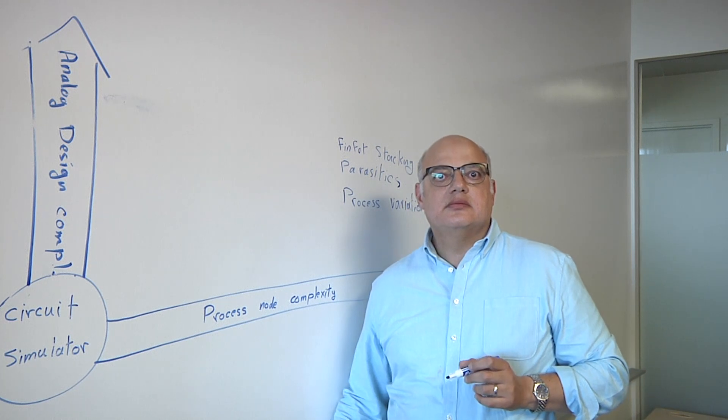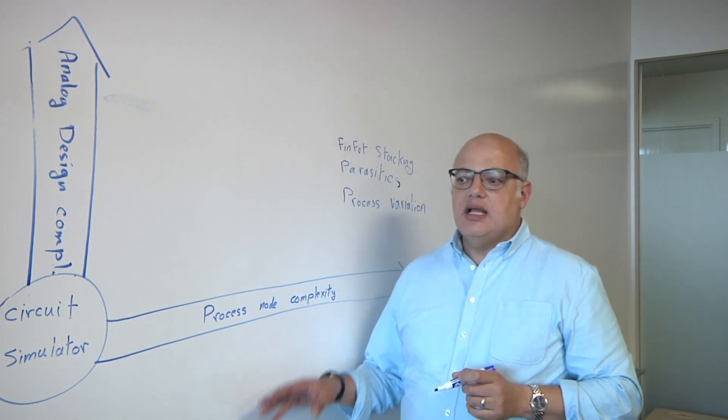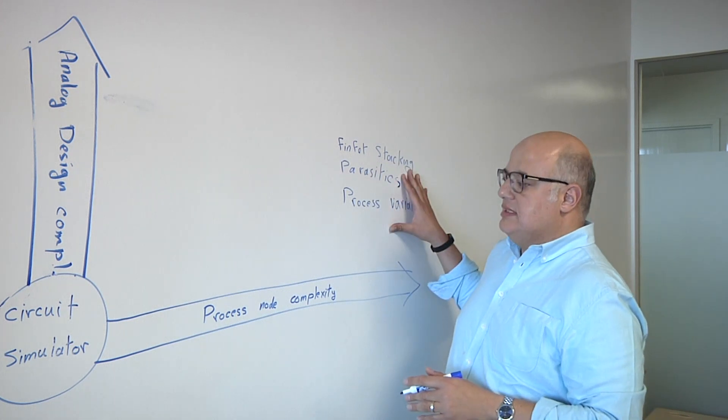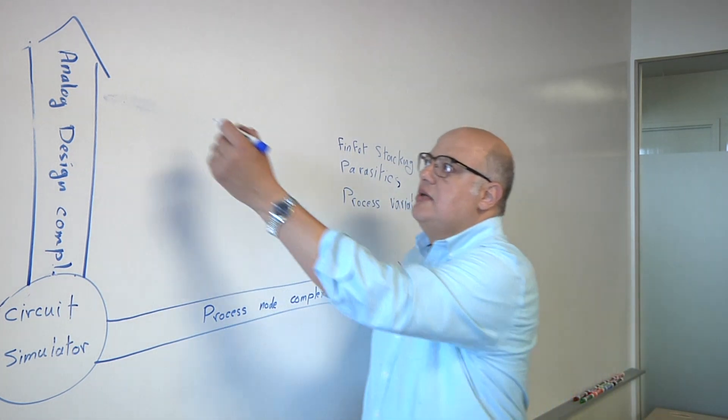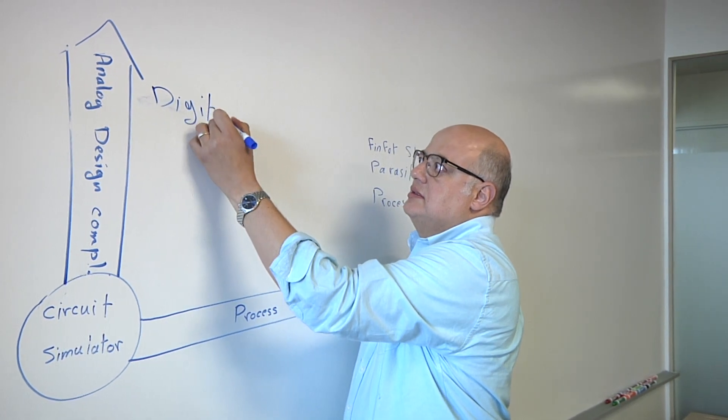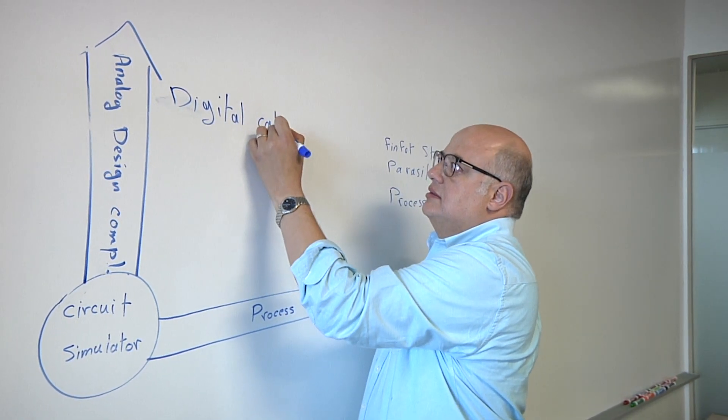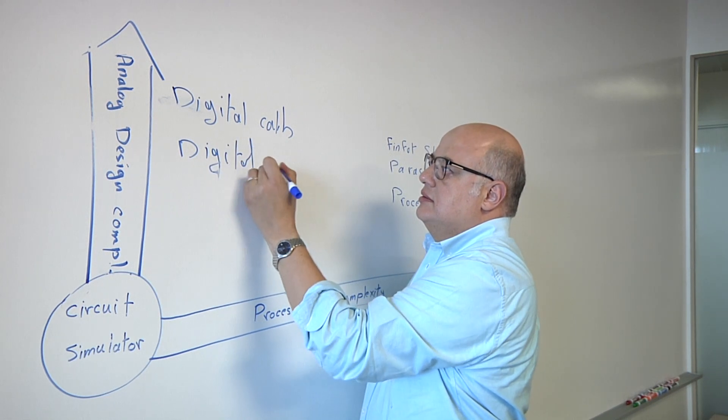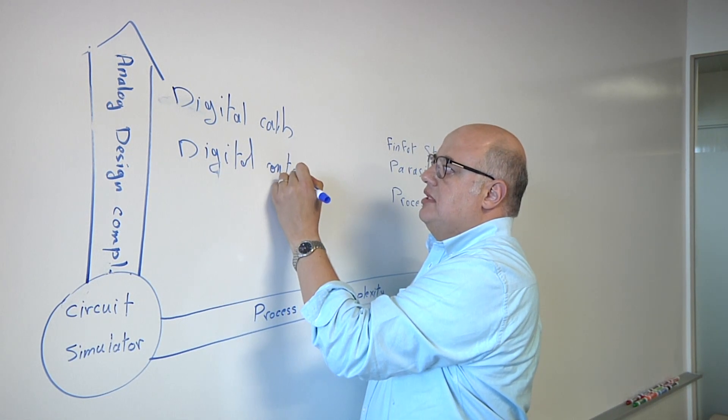Analog circuits are large. How do you go about simulating them? Analog circuits are large. And they are getting larger because of all these process node complexity. Because of the digital calibration. Digital control. The multiple modes, multiple standards.